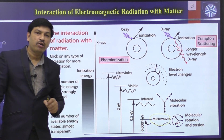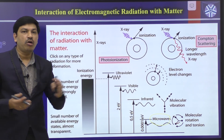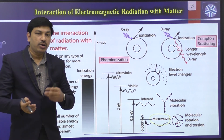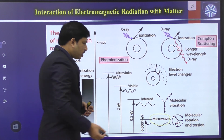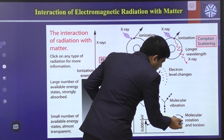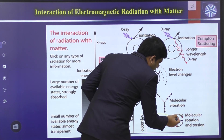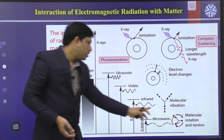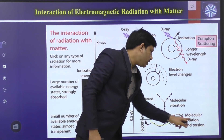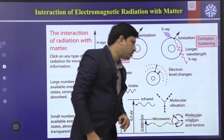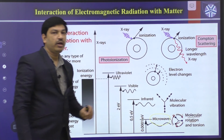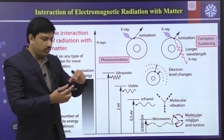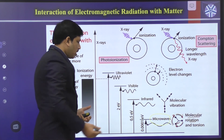If we send microwave radiation toward an unknown compound — microwave being a lower energy, longer wavelength radiation — it cannot cause electronic excitation. Instead, it can only change molecular rotations. The molecule rotates along its bond axis, and the rotational energy of the molecule changes compared to its normal state. So microwave radiation produces rotational changes in the molecule.